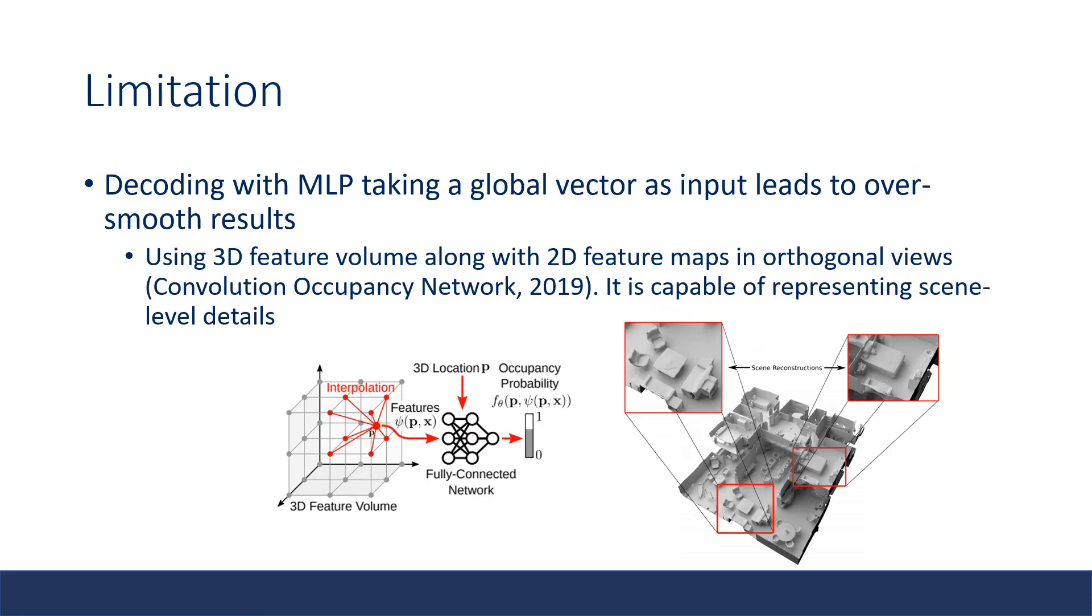Another limitation is that decoding with MLP taking a global vector as input leads to over-smooth results. One approach to this problem is to use a 3D feature volume along with 2D feature maps in orthogonal views. This one is proposed in the paper called Convolutional Occupancy Network. This work is capable of representing scene level details.